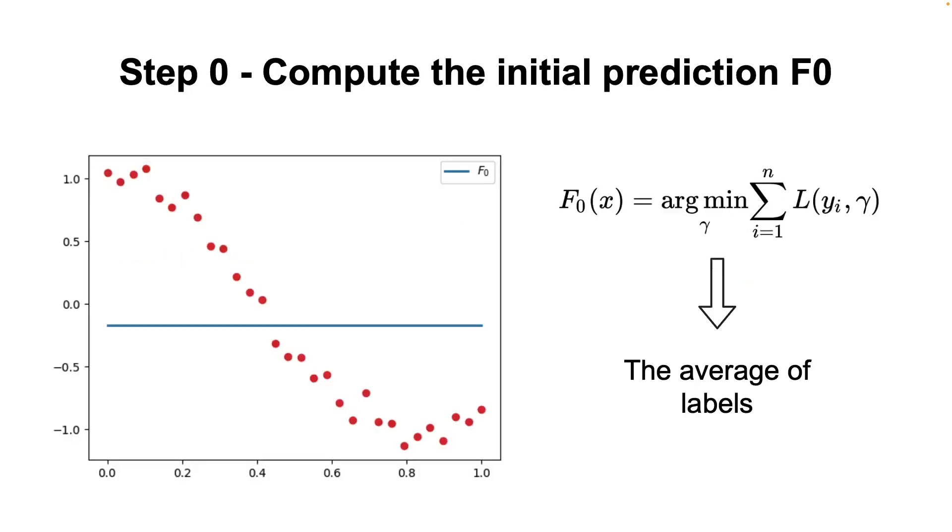As I said, the first step is to compute f0 and for regression, when the mean square loss is employed, it is nothing else than the average of the labels. I've added some materials in the description that explain how this is derived for those of you that want to see more.